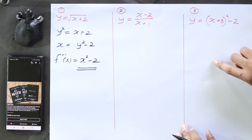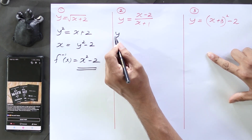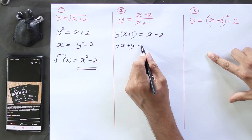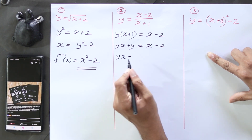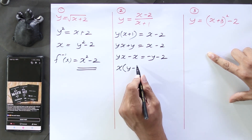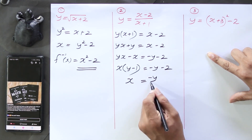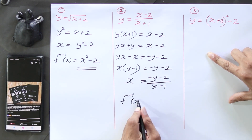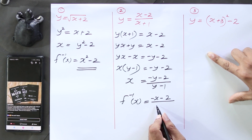Moving on to the next example: y equals x minus 2 over x plus 1. We subject x by bringing x plus 1 to the other side: y times (x plus 1) equals x minus 2. Opening brackets: yx plus y equals x minus 2. Rearranging: yx minus x equals minus y minus 2. Taking x out: x(y minus 1) equals minus y minus 2. So x equals minus y minus 2 over y minus 1. Instead of x we write f inverse of x and instead of y we write x, giving the inverse function: minus x minus 2 over x minus 1.